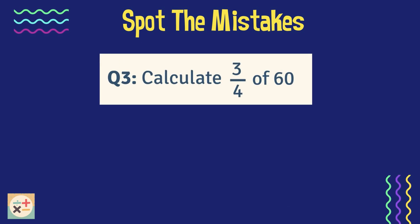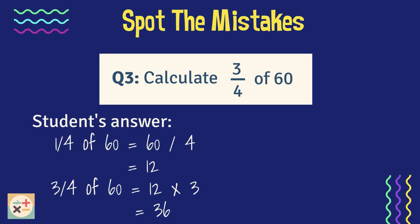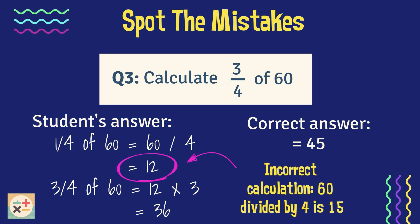Question 3. The student has been asked to find 3 quarters of 60. Have a look at their answer and calculations to see if you can spot where the student made an error. To help you identify this, the correct answer to the question is 45. Here, we can see the student made an error in their calculation of 60 divided by 4, which equals 15. However, the student noted down 12 for their answer, resulting in the subsequent calculations being incorrect, despite the fact the method they used would have worked.